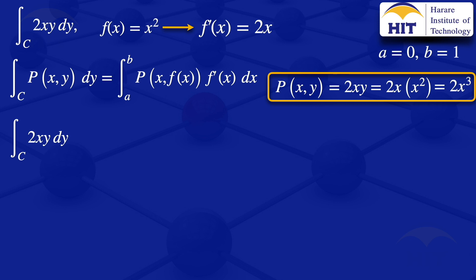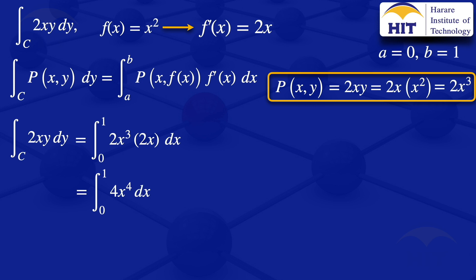Substituting into the formula, we have the integral from 0 to 1 of 2x cubed multiplied by 2x with respect to x. Multiplying gives 4x to the power 4, so we integrate 4x to the power 4 from 0 to 1. This gives 4x to the power 5 divided by 5 with limits 0 to 1, and the result is 4 over 5.